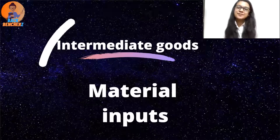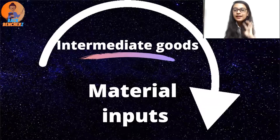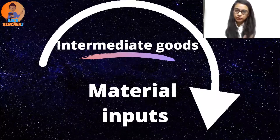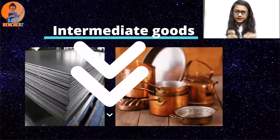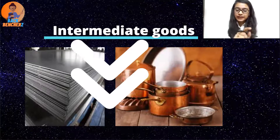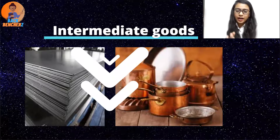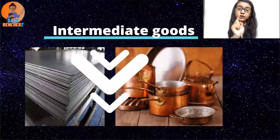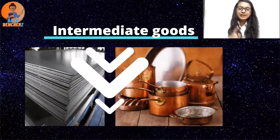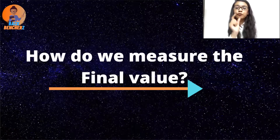For example, steel sheets are used in making automobiles. Similarly, take copper — utensils are the final product, but the copper used to make those utensils is an intermediate input. So the copper that was used in making utensils becomes an intermediate good in that production process.